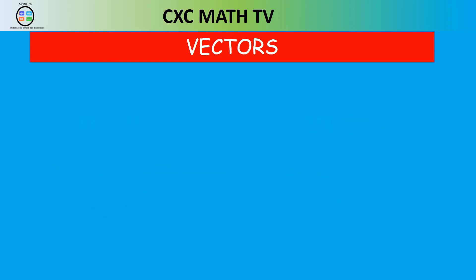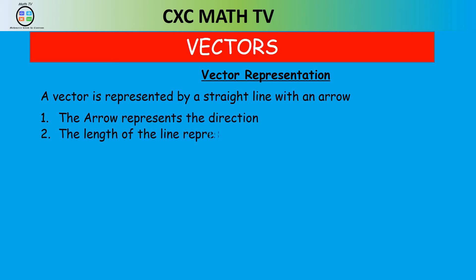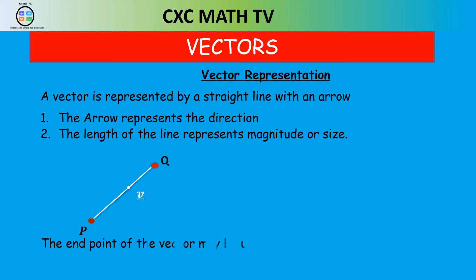Now we're going to focus only on the vector quantities. Vectors are represented in a particular way — a vector is represented by a straight line with an arrow. The arrow represents the direction, and the length of the line represents the magnitude or size of the vector. So let's put a line here with points PQ. The vector PQ is going in the direction from P to Q, and so we call that vector PQ.